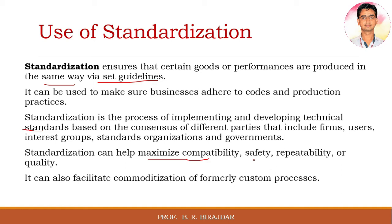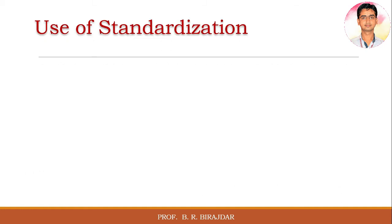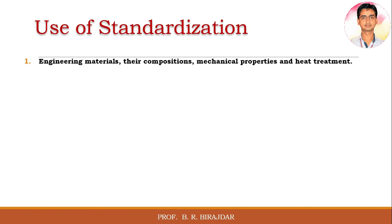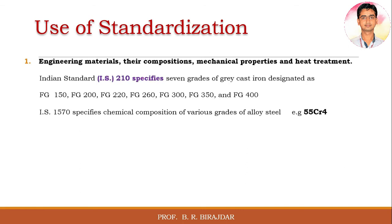There are different standardization categories we will see one by one. The first is related to engineering materials. Here, Indian Standard IS 210 specifies the grades of gray cast iron, which are designated as FG 150, FG 200, and so on.